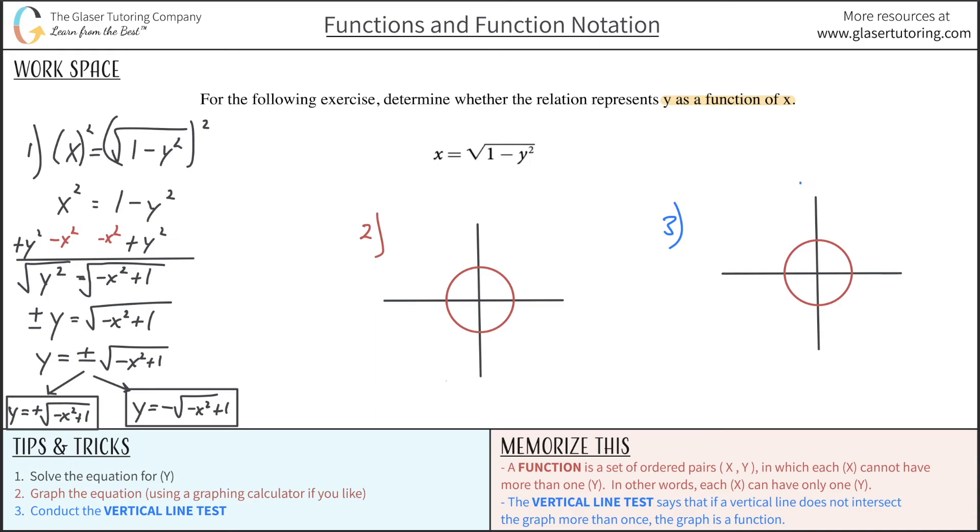So if I were to draw a vertical line here, what happens? Well, I intersect the graph in two locations. I intersect it here and here. Once it intersects the graph two or more times, it fails the vertical line test. I don't even have to test any other spots.